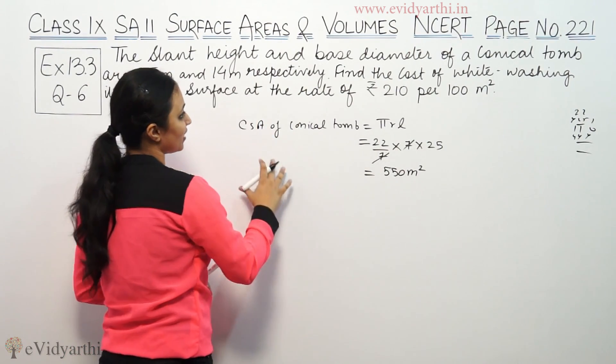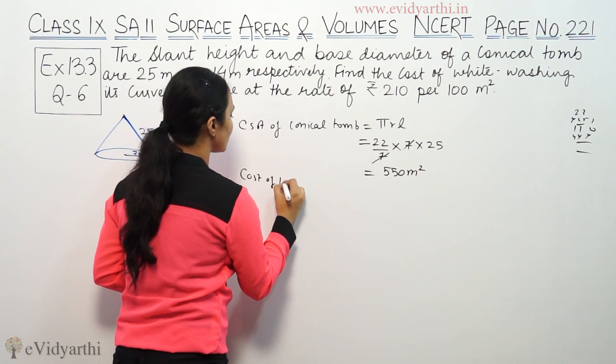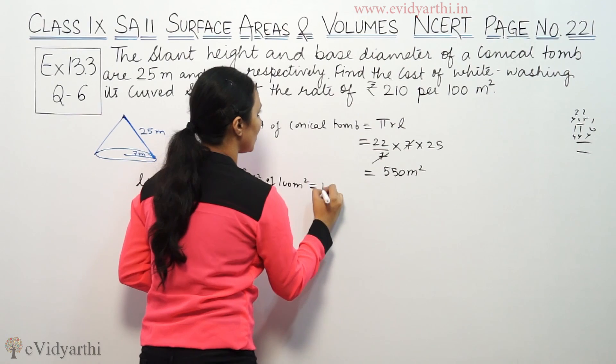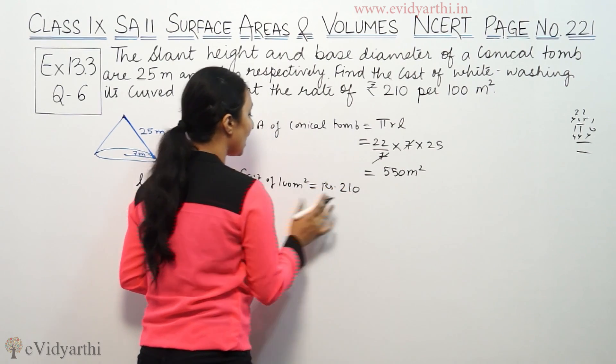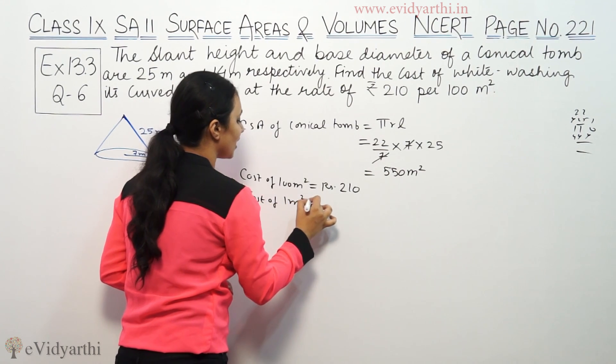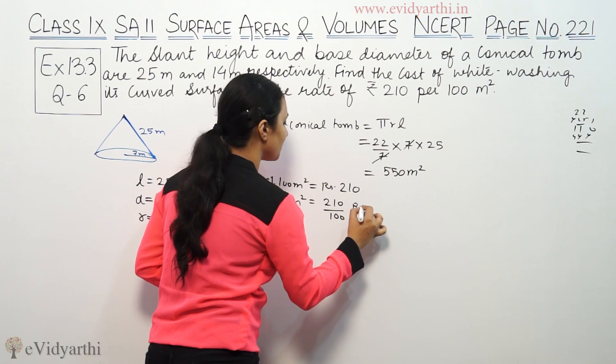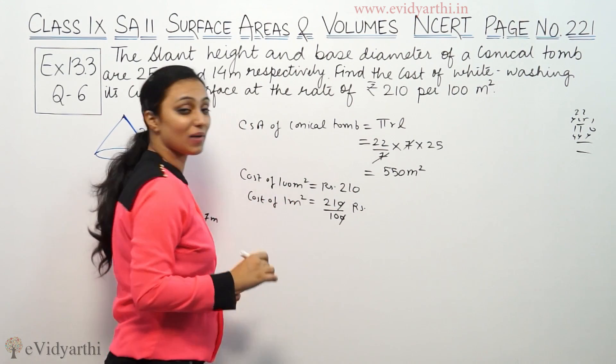Now we will find the cost. Cost of 100 meters square equals 210 rupees. We are using unitary method. Cost of 1 meter square will be 210 by 100 rupees, that means 21 by 10 rupees.